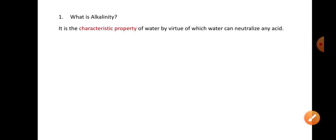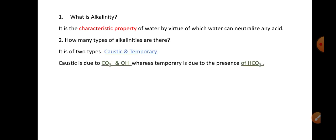A commonly asked question is: what is alkalinity? Alkalinity is the characteristic property of water by virtue of which water can neutralize any acid. How many types of alkalinities are there? In total there are two types: caustic and temporary. Caustic alkalinity is caused due to the presence of carbonate ions and hydroxyl ions, whereas temporary alkalinity is caused due to bicarbonate ions.